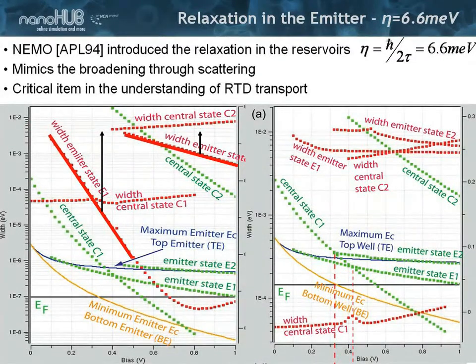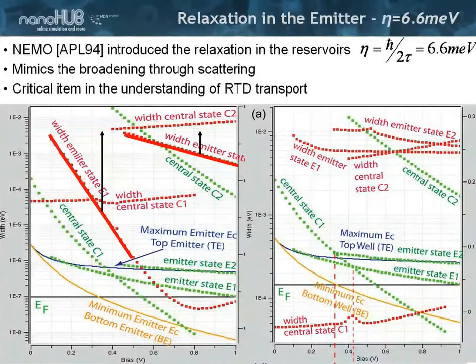What we introduced in NEMO, this is published in an APL in '94, is that we introduced the so-called optical potential iη as h-bar over 2τ. And we call that a relaxation in the emitter. And that mimics the broadening through scattering. And that turned out to be a key element.